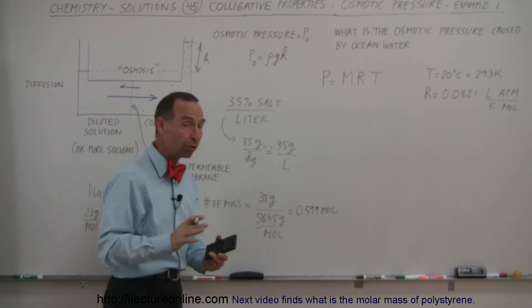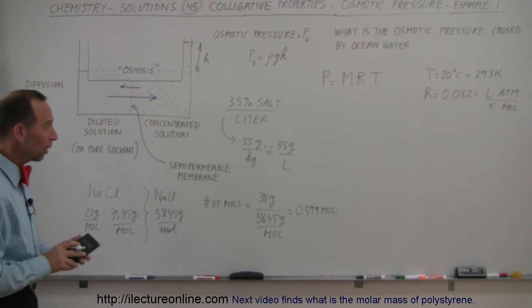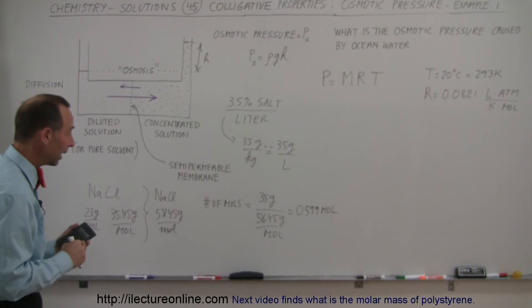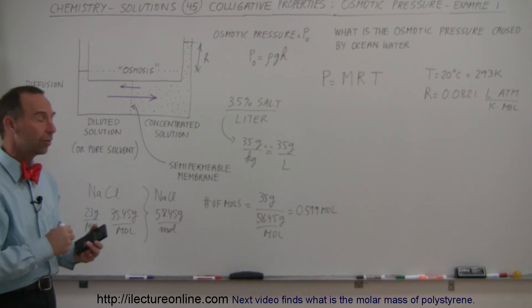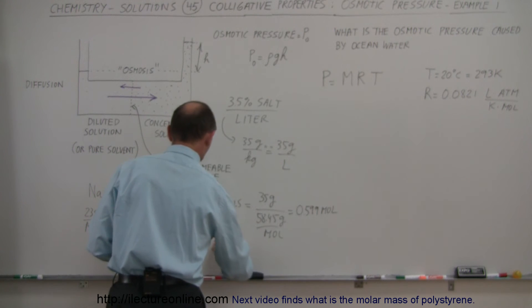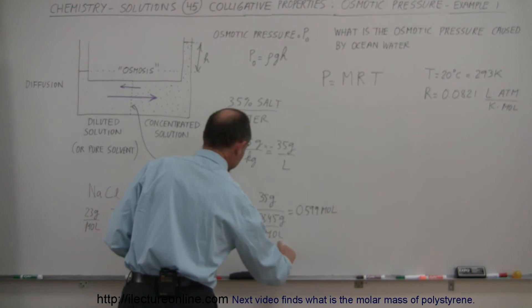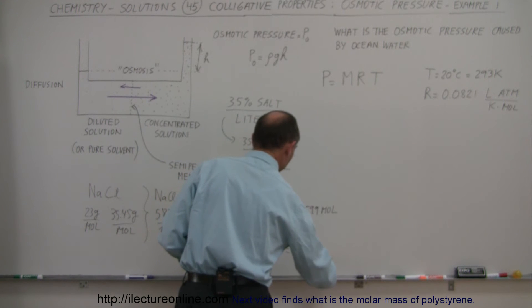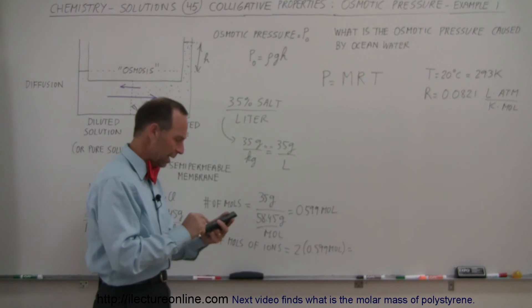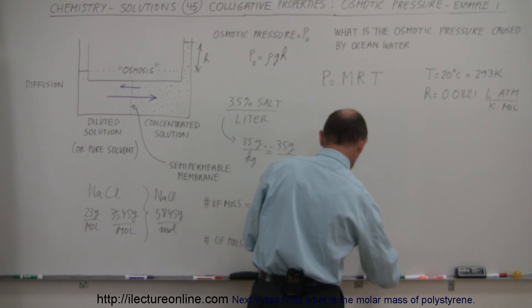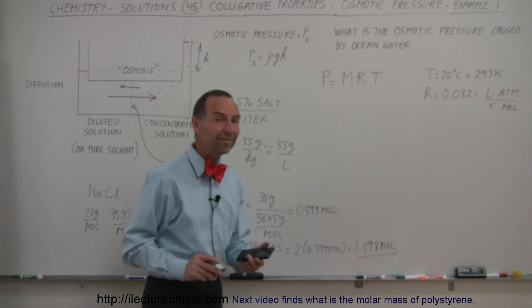And that would be of sodium chloride in one liter of ocean water. But now we realize that, of course, sodium chloride will separate into sodium and chlorine ions, so we'll have twice that many moles of ions in the solution. So number of moles of ions is equal to twice that number, so 0.599 moles. And let's see what we get, times 2 equals, that would be 1.198 moles of ions in seawater.